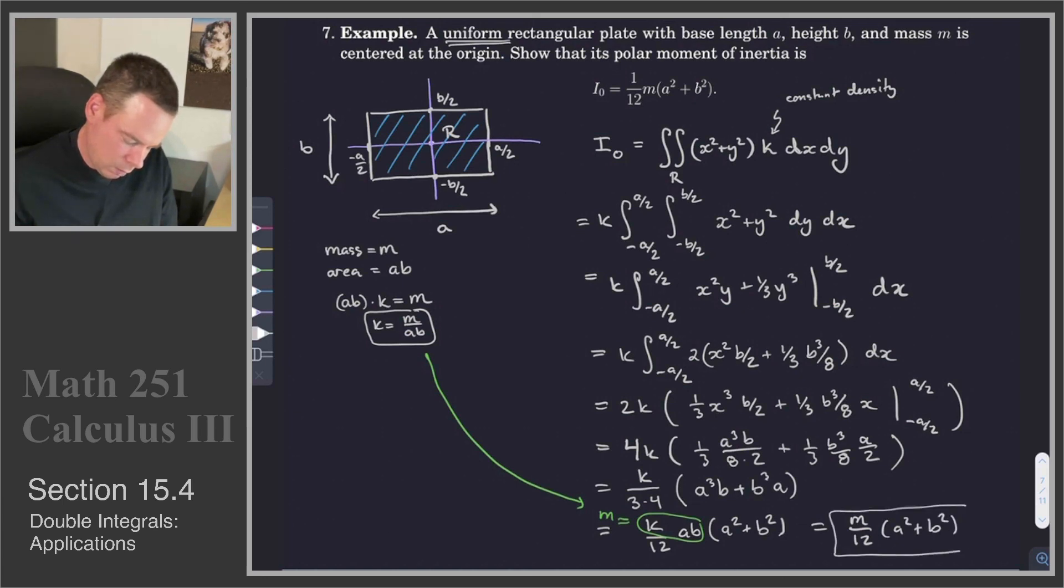So this boils down to M/12(A² + B²). And so there is our polar moment of inertia.